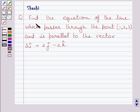Question says, find the equation of the line which passes through the point (1, 2, 3) and is parallel to the vector 3i plus 2j minus 2k.